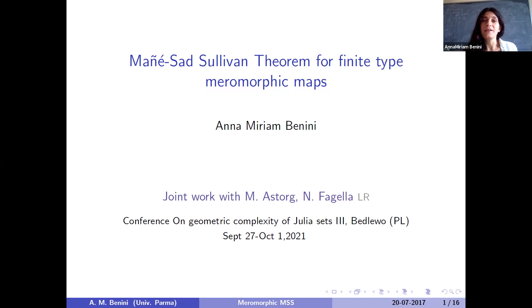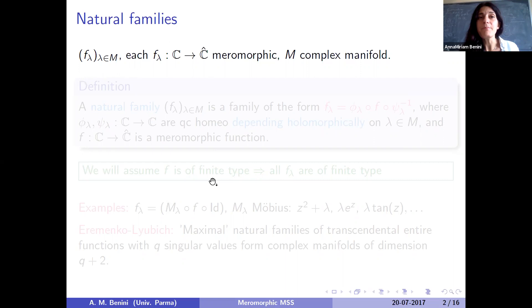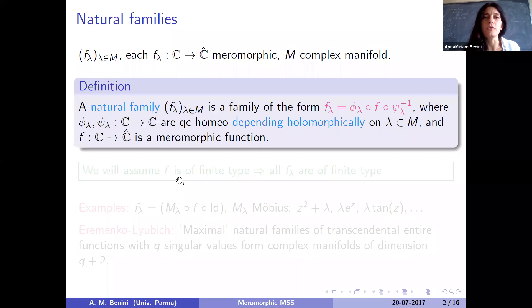There will be some overlapping with Nuria's talk. Let me start by setting up the stage again and talk about natural families. We're considering families of meromorphic functions ranging over a holomorphic parameter lambda, and each of these functions is meromorphic. Later we will restrict to finite type. They are parametrized by a complex parameter lambda belonging to a complex manifold M, and they depend holomorphically on this parameter.